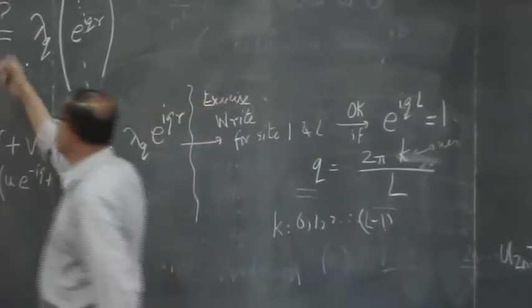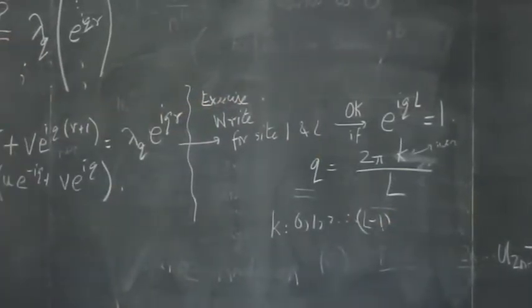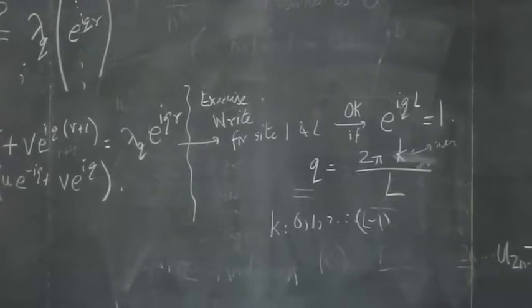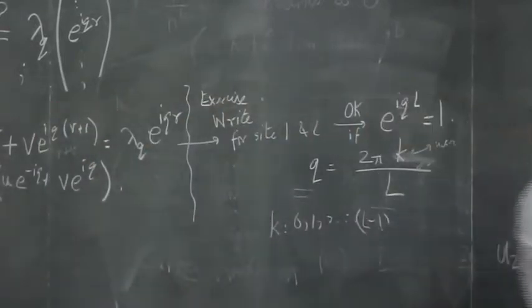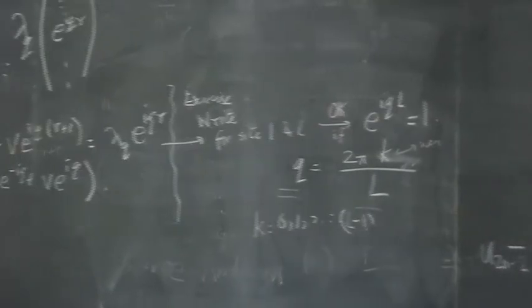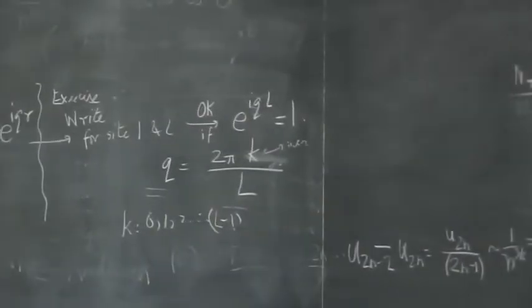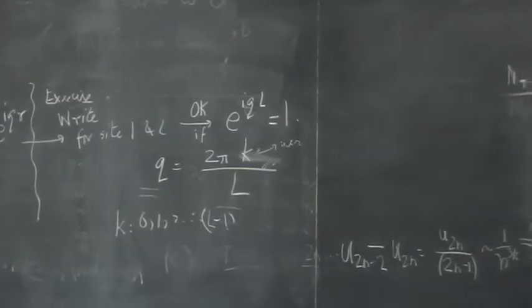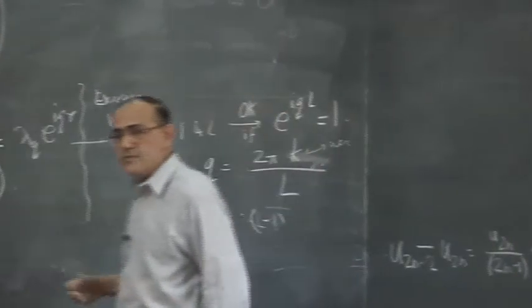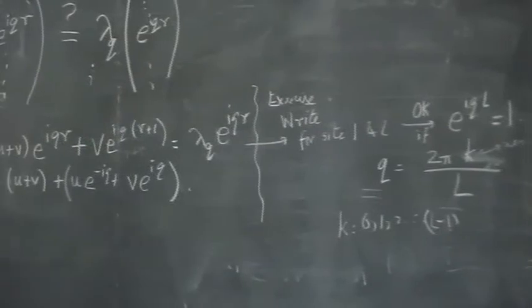K equal to 0 corresponds to q equals 0. So, this is what it is. We found the eigenvectors. This is as usual in all problems like harmonic oscillators, etc. in one dimension. The boundary condition selects q. Translation invariance implies e^(iqr).